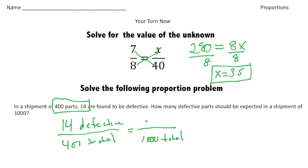And then the x, or the unknown, is going to be up here on the top. But let's write down the label, defective. So now that we have our ratios, we can solve.